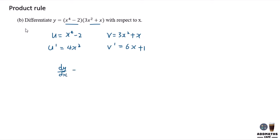So to differentiate that, dy/dx equals u prime v plus v prime u. So u prime v: u prime is 4x cubed times v, which is 3x squared plus x, plus v prime, which is 6x plus 1, times u, which is x to the power of 4 minus 2.